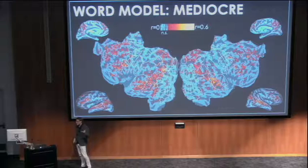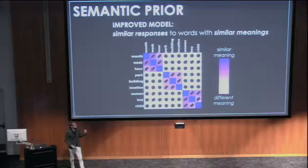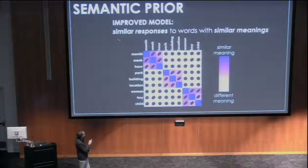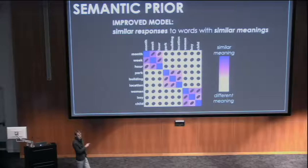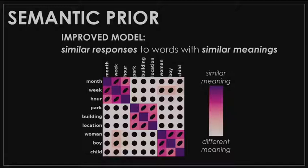What can we do to make this a more successful model? One thing is to incorporate a semantic prior. Instead of saying there's an independent response to each word in each voxel, let's say there are similar responses to words with similar meanings. Words like month, week, and hour are all related to each other — they all relate to time. Words like park, building, and location are all related. Woman, boy, and child are all related. So maybe if a voxel responds strongly to month, it should also respond to week and hour. Or if it responds to building, it should also respond to park and location.